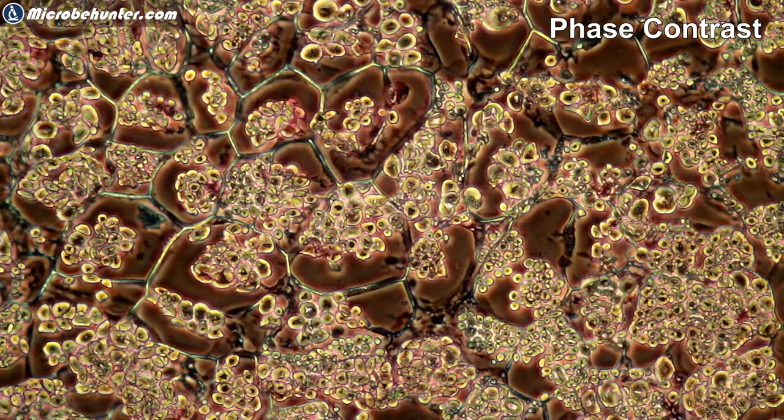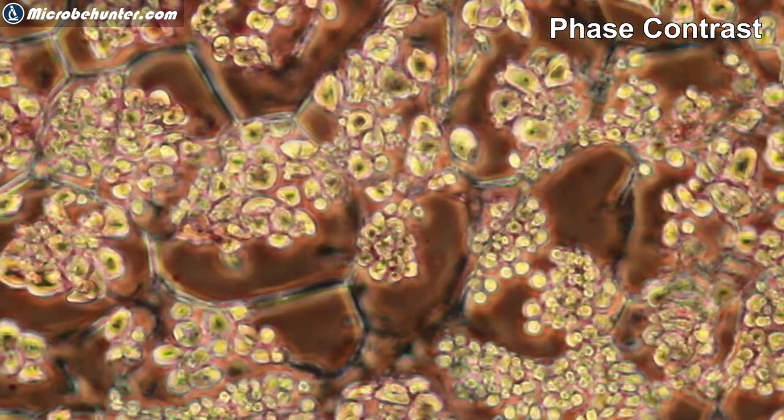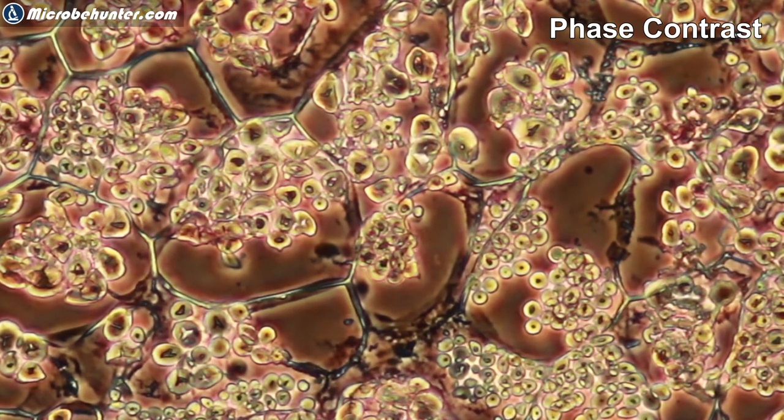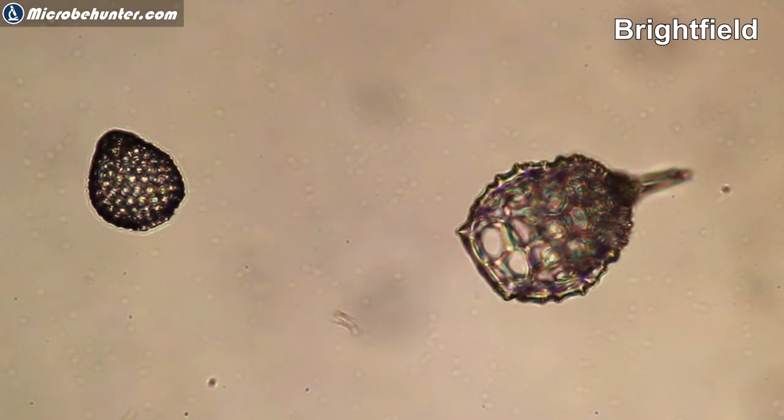Now cropped in a little bit, and now the starch grains are yet better visible. And you might also notice that the structures have a bright halo around them. And that is typical for phase contrast.